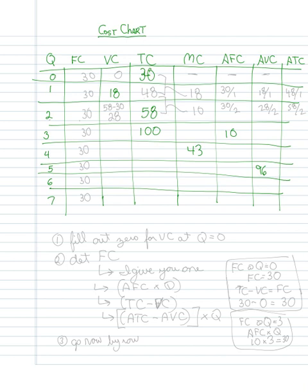The first thing you should do is fill out zero for variable cost at quantity zero. You do that because at zero levels, zero production, you wouldn't have any variable costs.